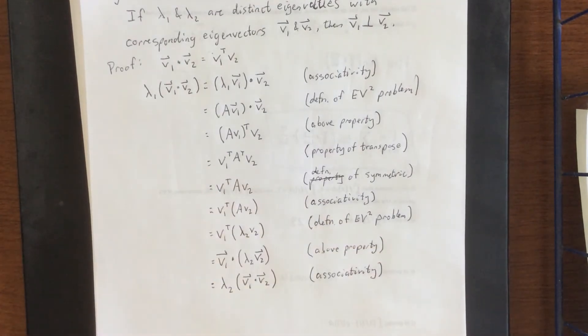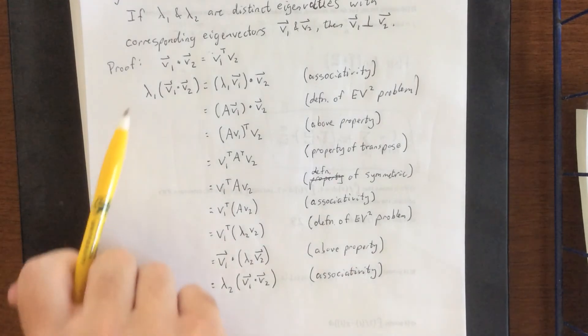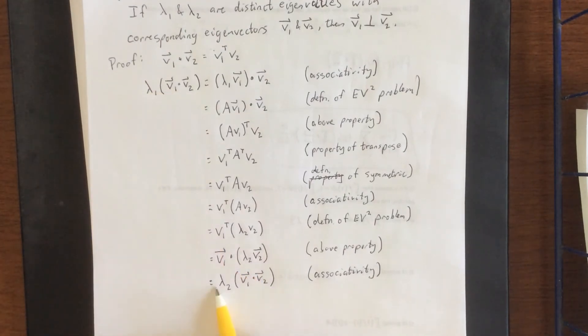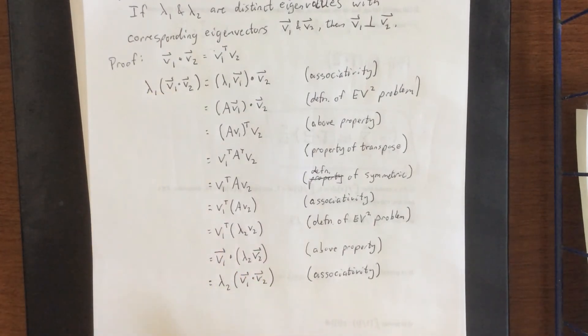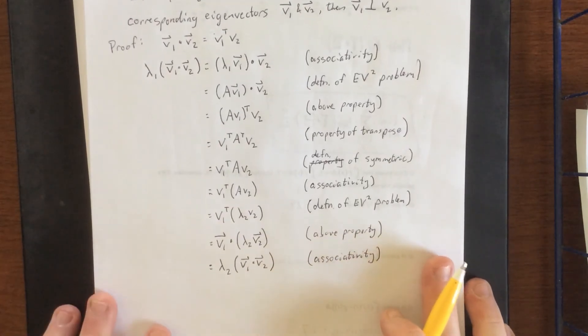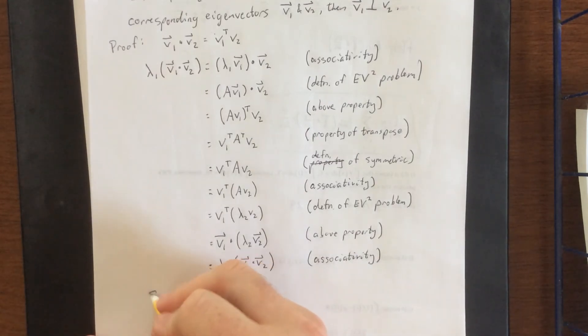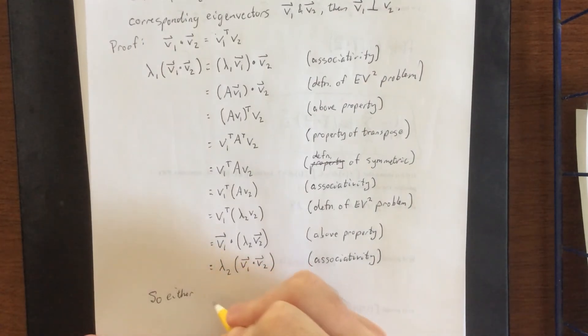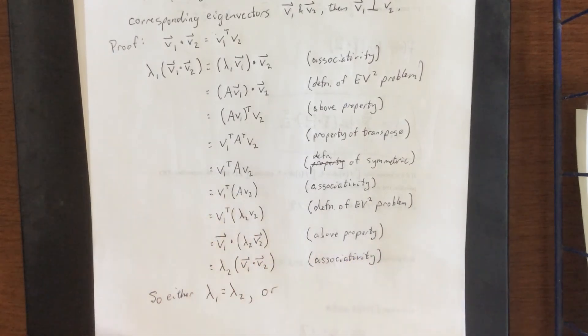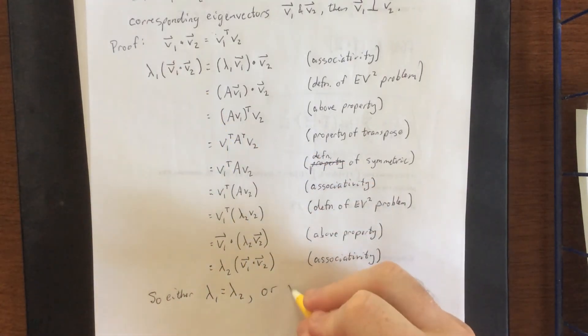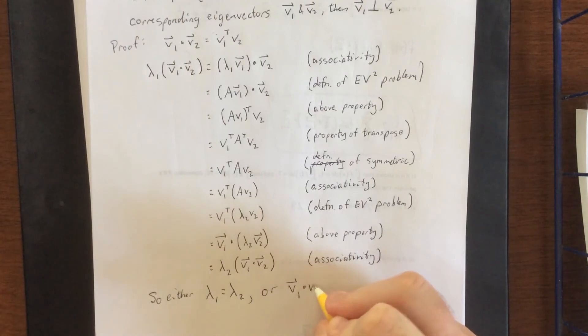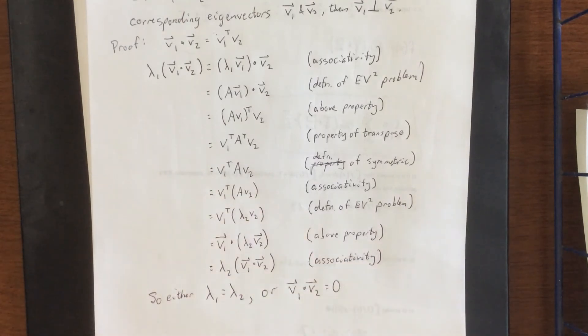Nice. Now this doesn't actually prove anything. What I wanted to show you is that we just showed that lambda 1 times this dot product is equal to lambda 2 times this dot product. The only way that two things like this can be equal to each other is we could divide both sides by the dot product and have these two things being equal to each other. So either lambda 1 is equal to lambda 2 or it's impossible to divide by this. And the only thing that you couldn't possibly divide by is if it's equal to 0.